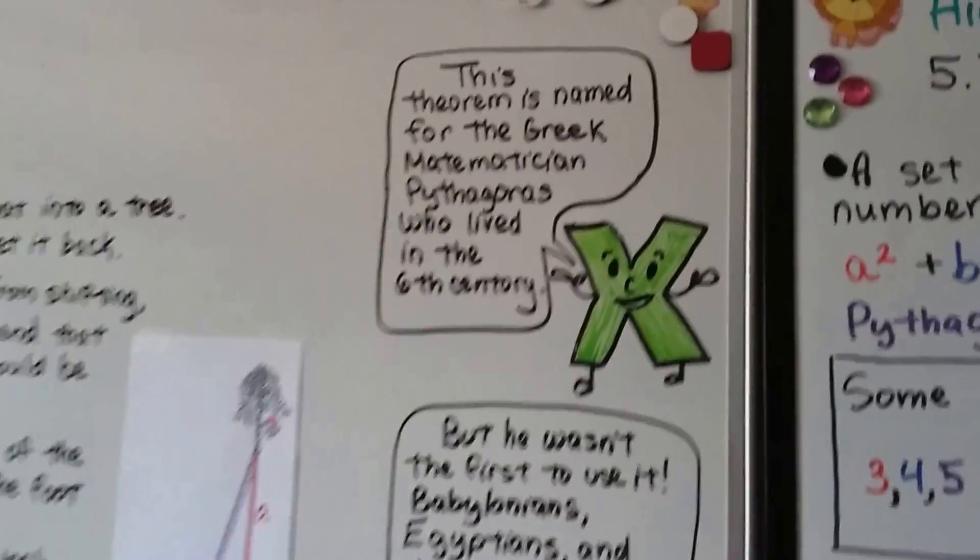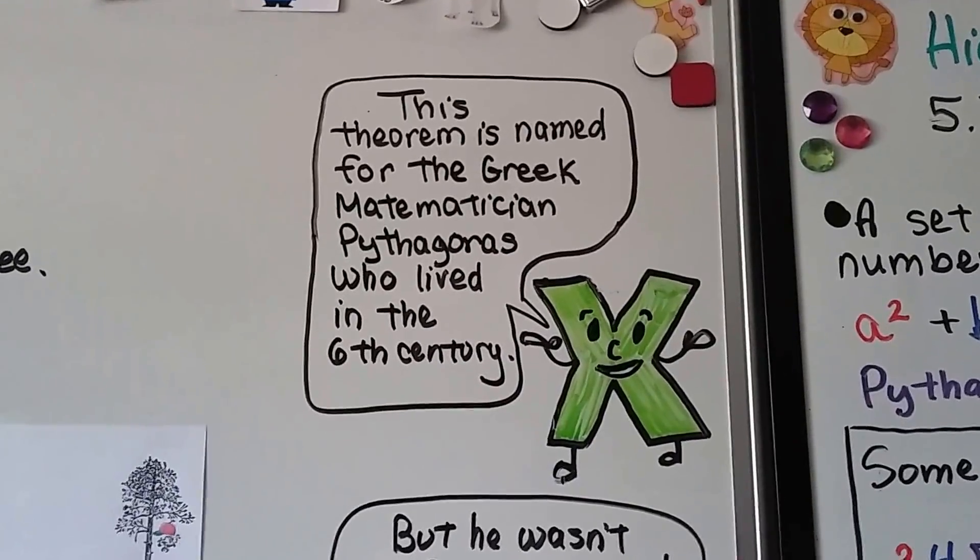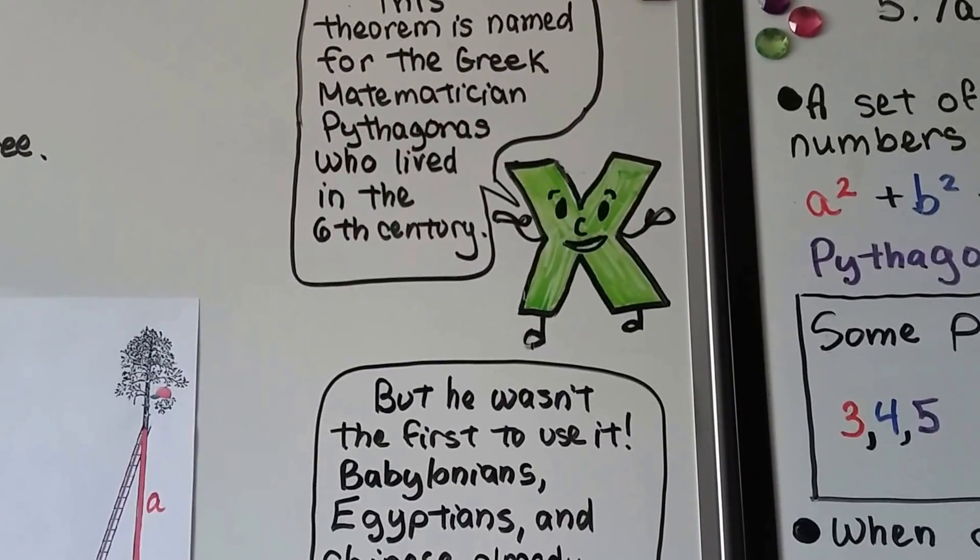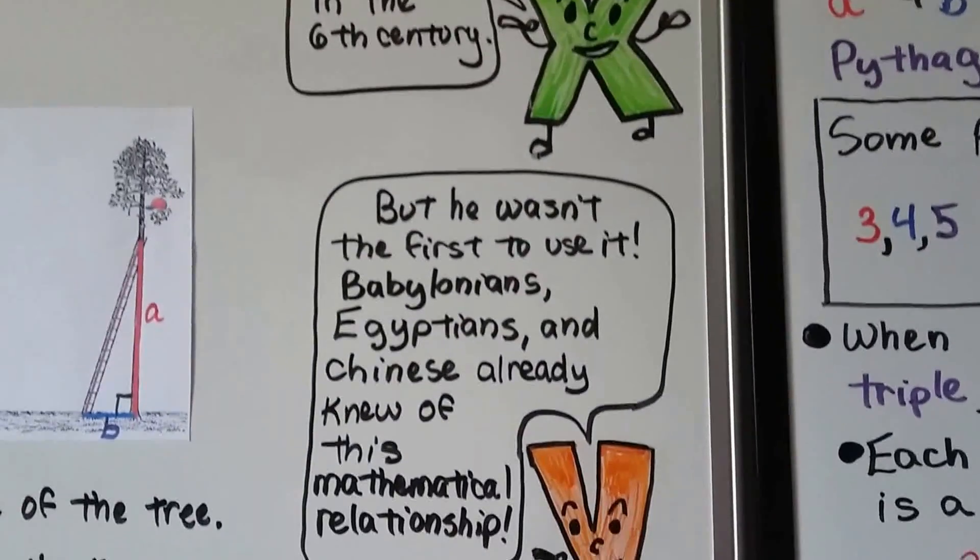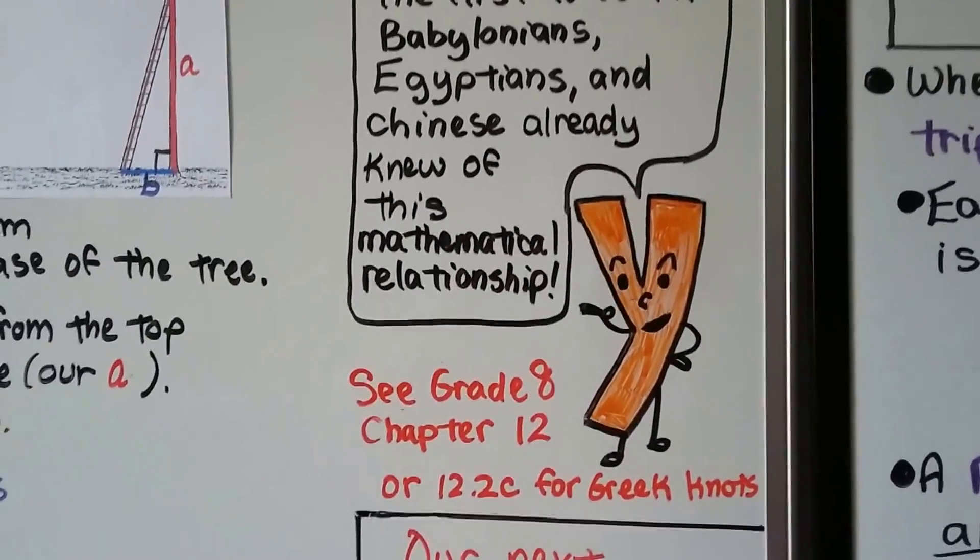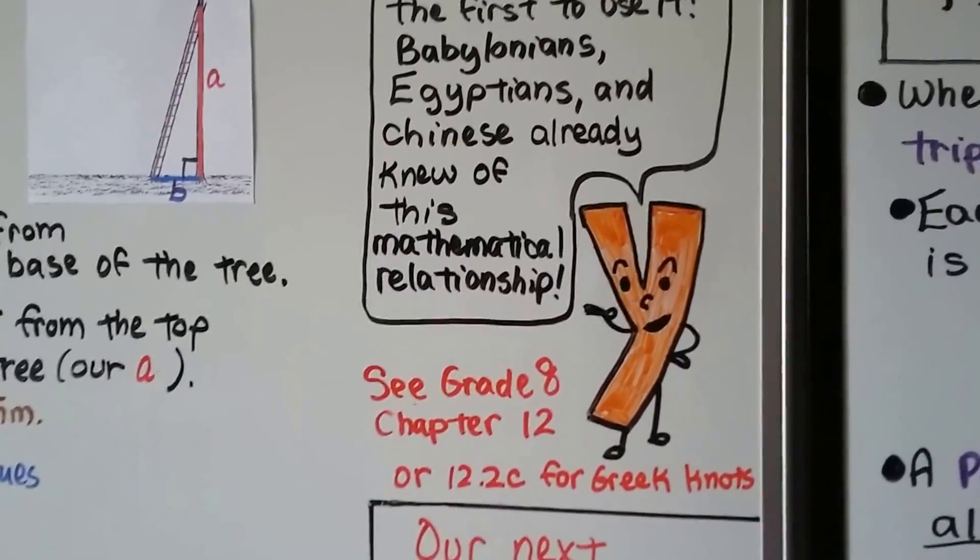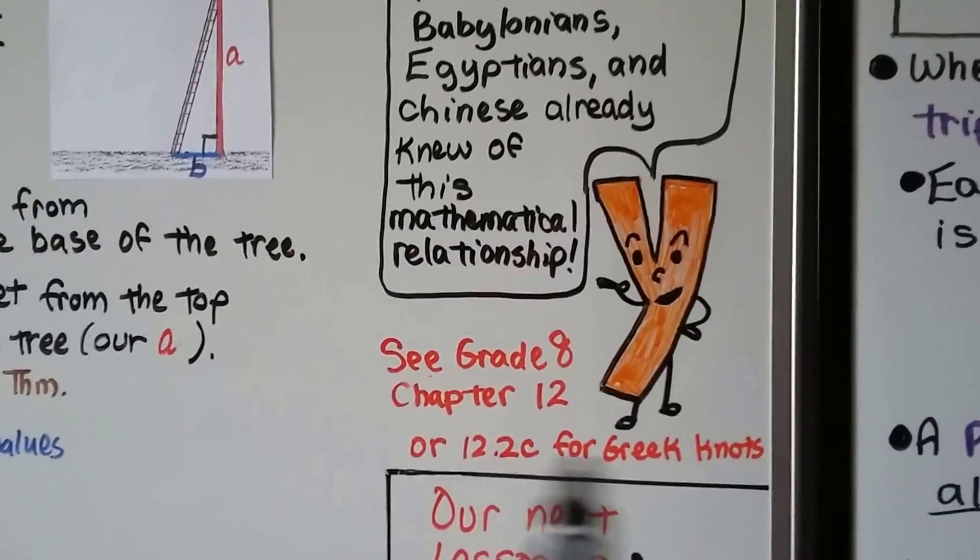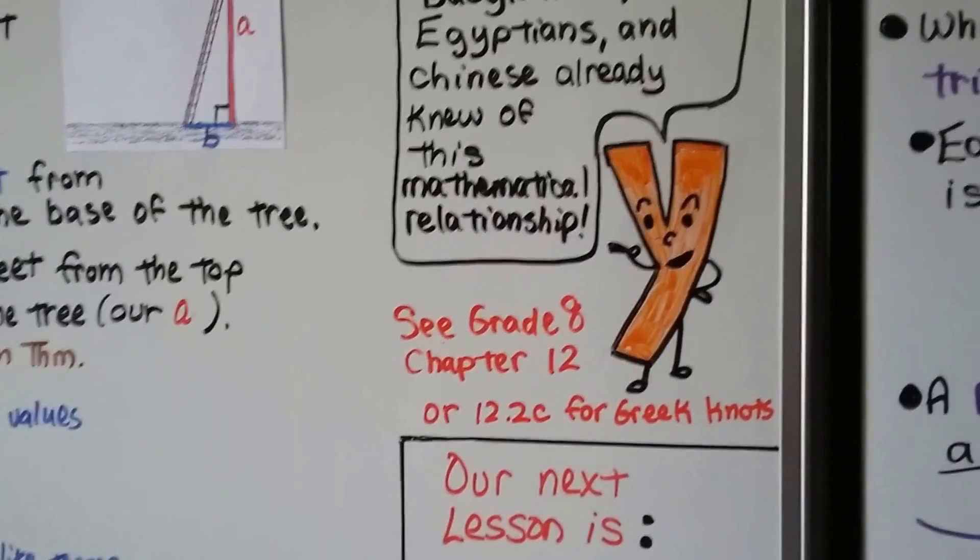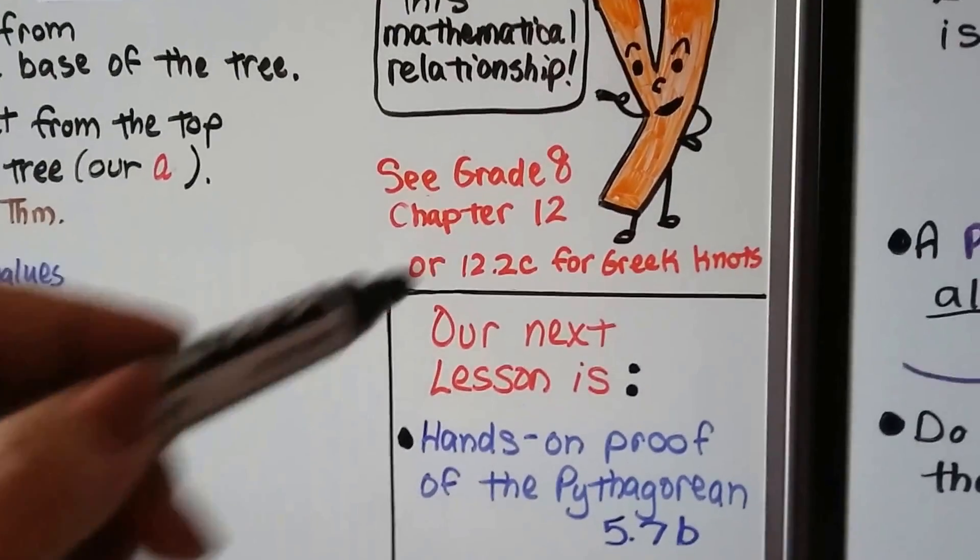This theorem is named for the Greek mathematician Pythagoras who lived in the sixth century. I think he was born around 569 or so, but he wasn't the first to use it. Most believe he was the first to prove it, but he wasn't the first to use it. The Babylonians, Egyptians, and Chinese already knew of this mathematical relationship. Now if you're really confused about the Pythagorean theorem after this, I have a whole chapter of grade 8 math that talks about this, and it might be at an easier level. And for those of you who are interested, did you know that the Greek people put knots on a rope that were equally distant from each other and used it for the Pythagorean theorem? That's 12.2c.